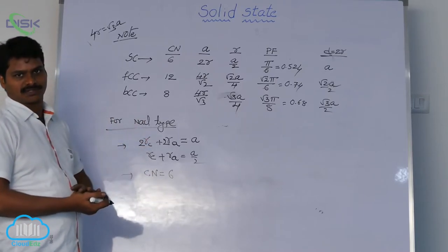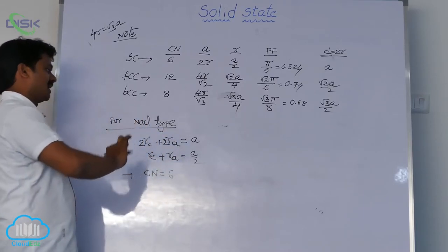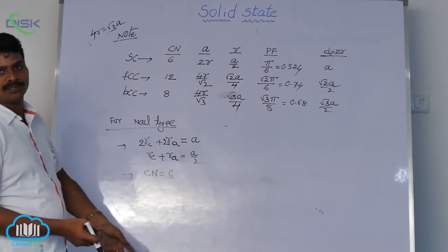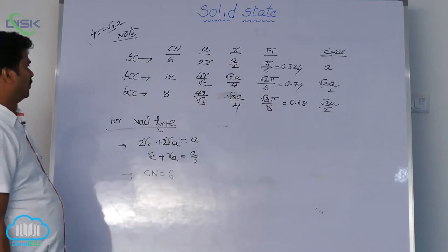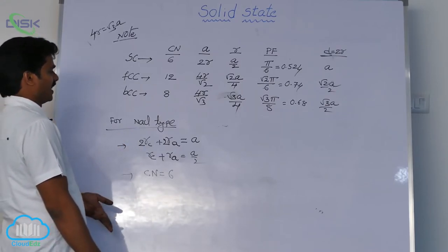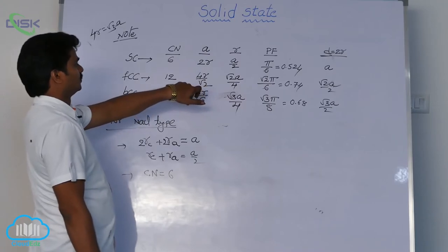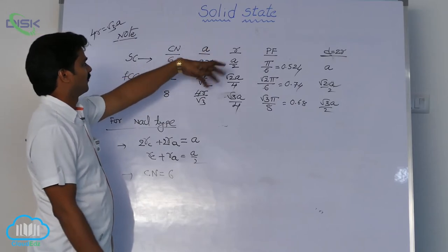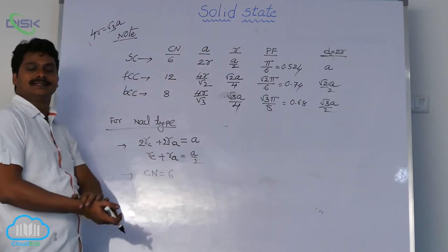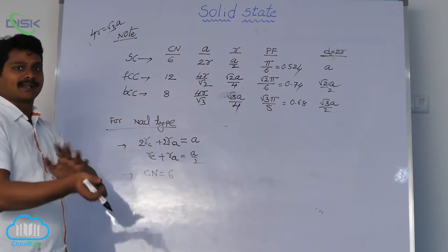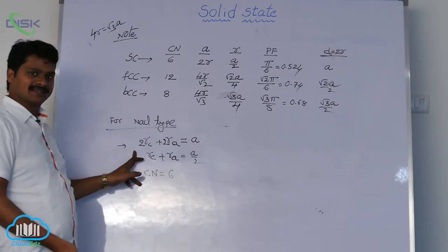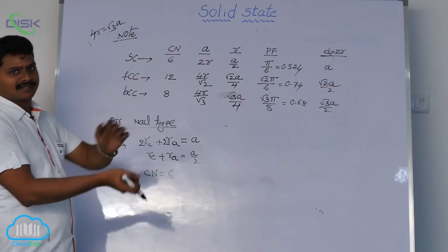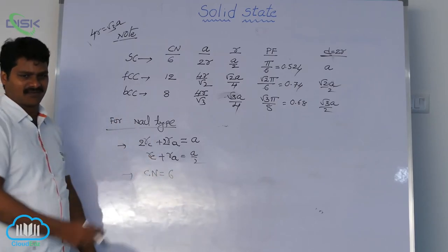NaCl type structure. So remember these points for NaCl type. Whenever NaCl structure is given, don't say coordination number 12. Don't say radius of atom is equal to √2a by 4. Don't say that. These are the formulas we use for atoms where all atoms are same. But in NaCl, it is an ionic crystal. Here cation's radius and anion's radius, we have to consider. That's why the formulas are different.